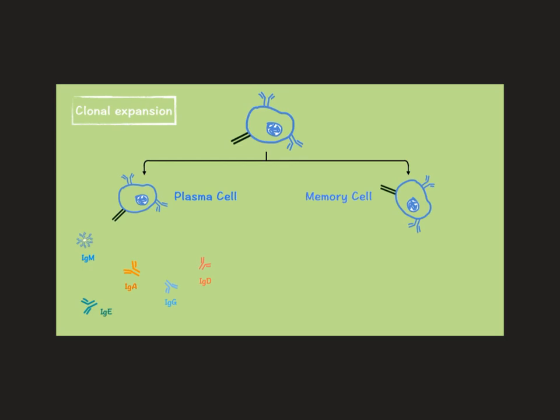These additional memory B-cells will be available in case the body comes into contact with that antigen again. Therefore, the secondary reaction of the body with the same antigen is much faster as these memory cells are already in the body, and there are also free-floating antibodies now in the body to neutralize those antigens should they come in again.